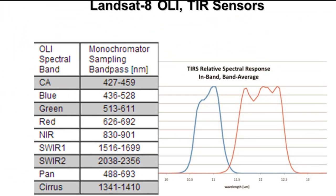Landsat 8 has two sensors on board. OLI, the Operational Land Imager, has bands including coastal aerosol, blue, green, red, and near-infrared as band 5, shortwave infrared as bands 6 and 7, a panchromatic band, and a special narrow band in the mid-infrared that senses cirrus clouds.